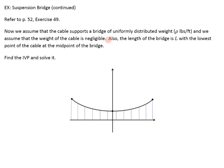So, now we assume that the cable supports a bridge of uniformly distributed weight, that is, for every foot, it weighs rho pounds. So, if you go x feet, it's rho x is the weight of that bridge. And we're going to assume that because the bridge weighs so much, the weight of the cable is negligible, and so we don't actually care about the weight of the cable itself, just the weight that it's supporting, what weight is pulling down on it, and that's just going to be that section of bridge. We're also going to say that this length right here is length L, and that the lowest point is at the midpoint.